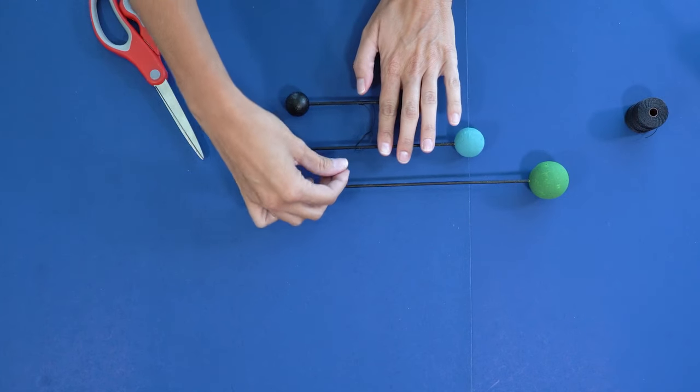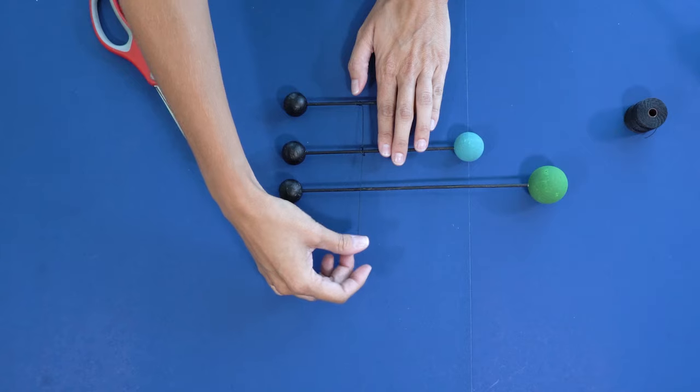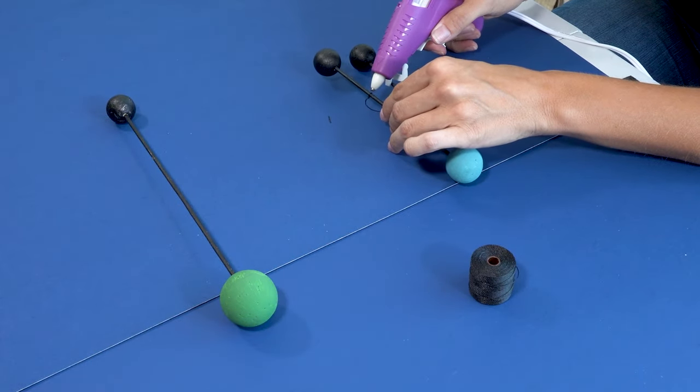You're going to attach the string to the second one and you're going to hold it with both hands and then pull tight. And now we want to add a little bead of glue to this one as well.